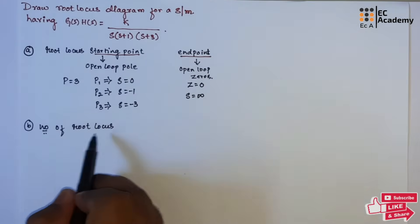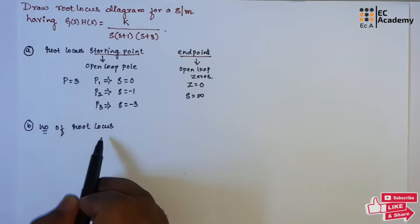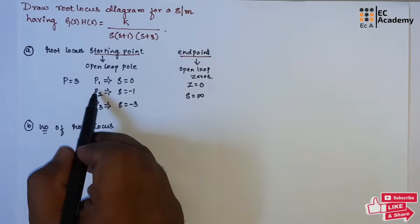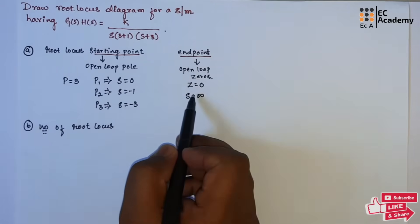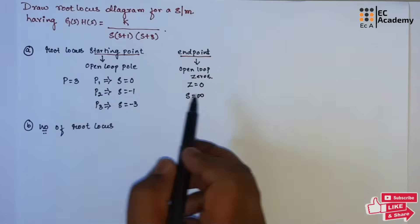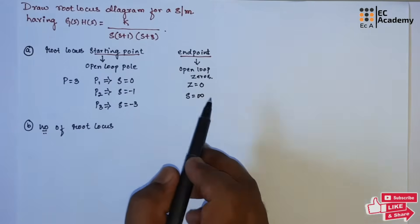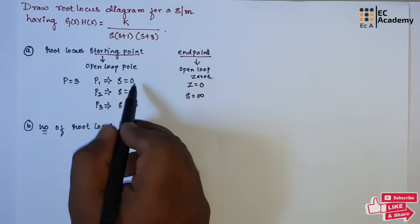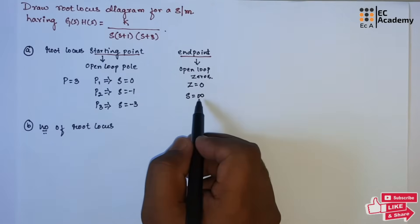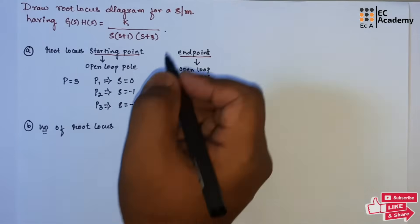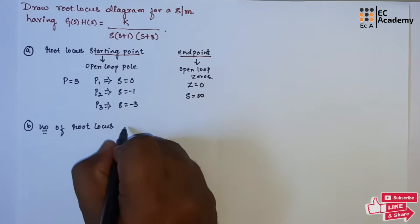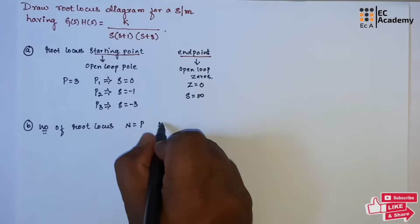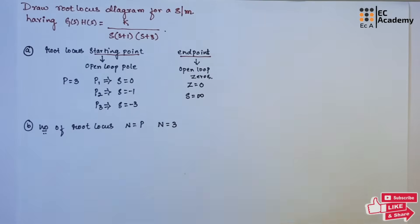Now let us find the number of root locus branches. The number of root locus branches equals the number of poles if poles are greater than zeros, or equals the number of zeros if zeros are greater than poles. In this case, the number of poles is greater than the number of zeros, so the number of root locus branches equals 3.